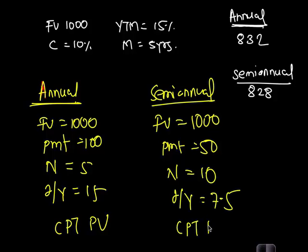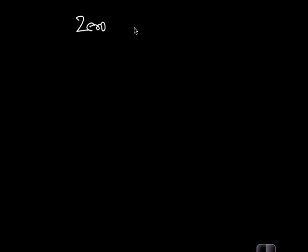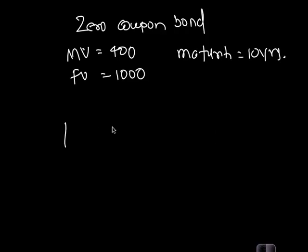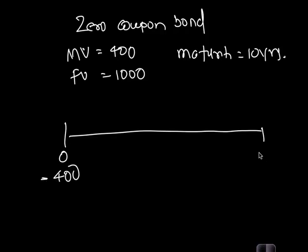The next concept — which is very interesting — is the zero coupon bond. Let's say we have a bond whose market value is 400, face value is 1000, and maturity is 10 years. This means at time zero we invest 400, and at time 10 we receive back 1000.